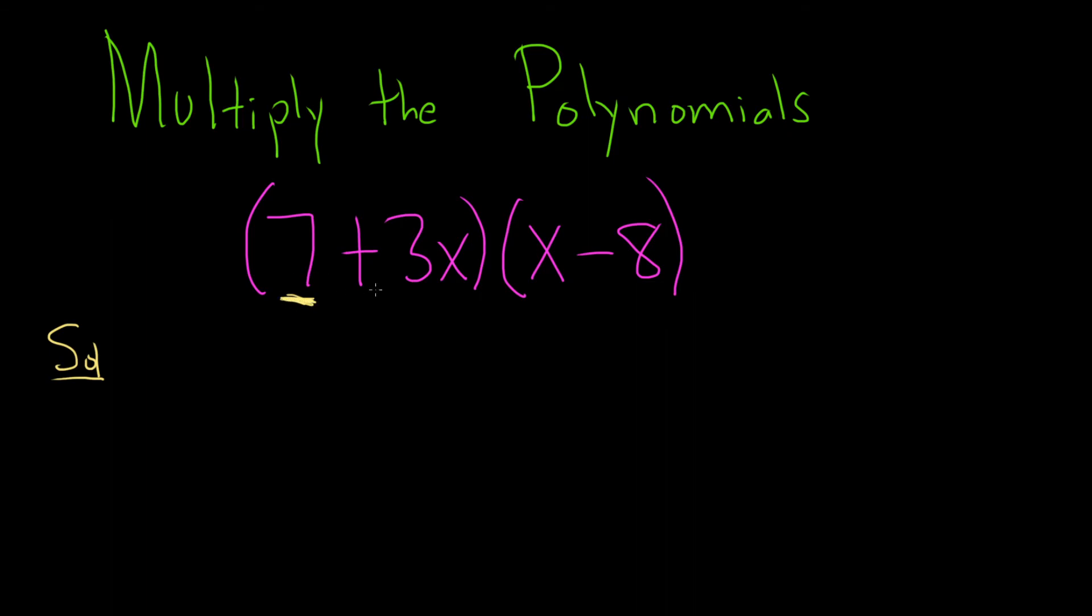So you take this number, the first one you see, and then just multiply it by everything you see over here on the right. So let's do that. So 7 times x is 7x, and then 7 times negative 8 is negative 56.